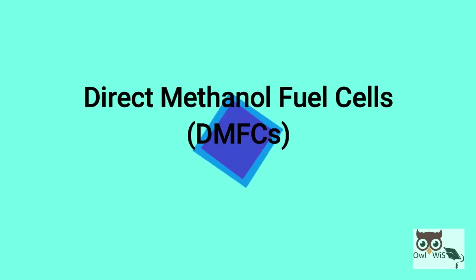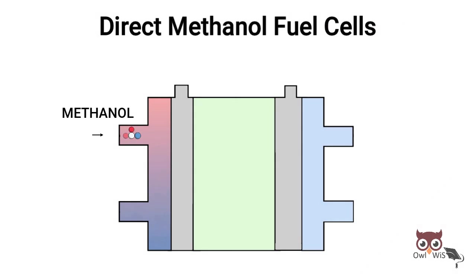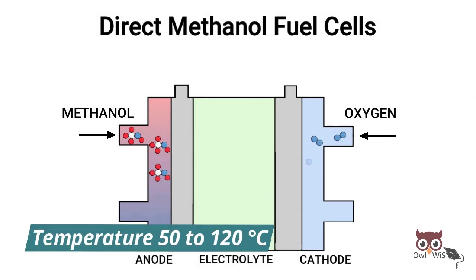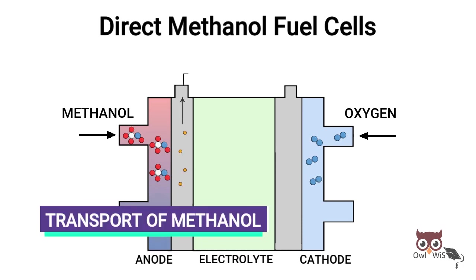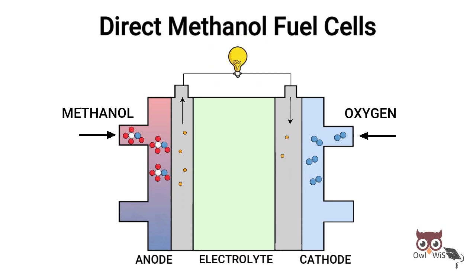Direct methanol fuel cells are powered by pure methanol which is usually mixed with water and fed directly to the fuel cell anode. Common operating temperatures are in the range of 50 to 120 degrees Celsius. Their main advantage is the ease of transport of methanol and energy density at reasonably stable liquid at all environmental conditions.